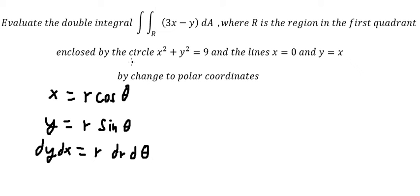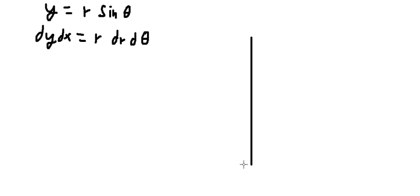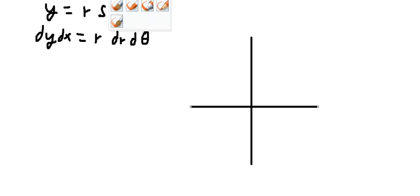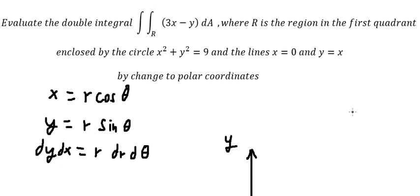Now we need to write about the region. The first thing we need to know is that this is about the first quadrant, so the region should be in this area. The next condition is about the circle.